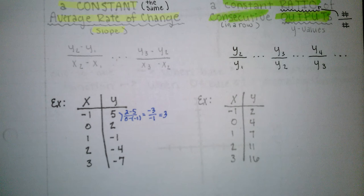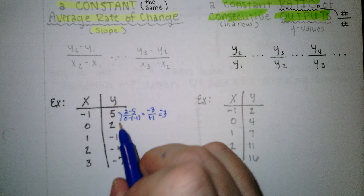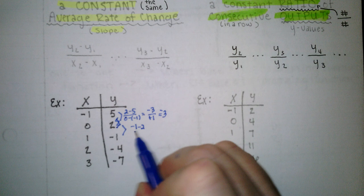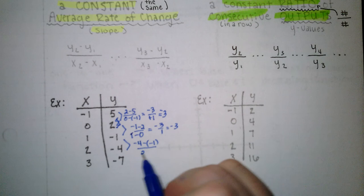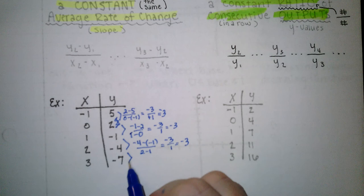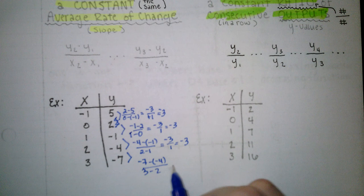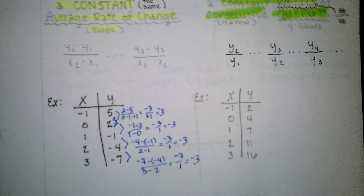Then between these two, negative 1 minus 2 over 1 minus 0. So negative 3 over 1, negative 3 again. And then these two, negative 4 minus negative 1 over 2 minus 1, which is negative 3 over 1. And then the last two, negative 7 minus negative 4 over 3 minus 2. So that is negative 3 over 1 again.